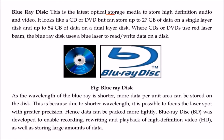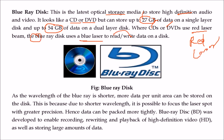Blu-ray disc is the latest optical storage media, capable of storing high-definition audio and video, specifically made for multimedia content. It looks like a CD or DVD but can store 27 GB on a single layer and 54 GB on a double layer. While CDs and DVDs use red laser, Blu-ray uses a blue laser with a shorter wavelength, allowing more data per unit area and more precise focusing, enabling denser data packing. Blu-ray was developed for HD video recording, rewriting, and playback, and for storing large amounts of data.